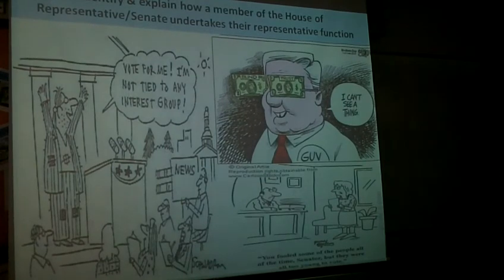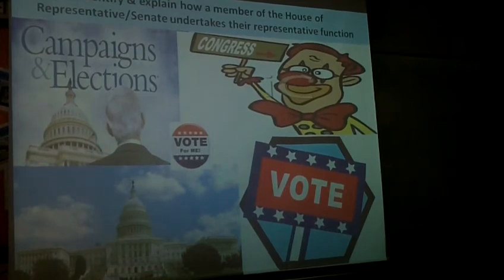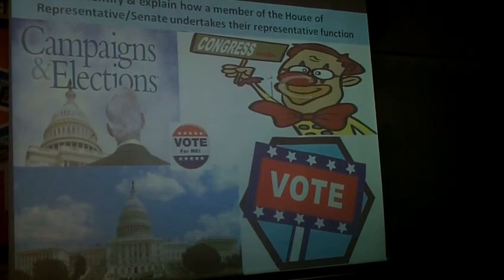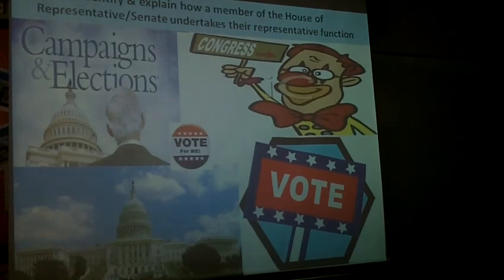A member of the Senate is elected every six years, and a member of the House is elected every two years. Campaigning, therefore, is a big part of the representative function, particularly for members of the House. This includes making speeches, having campaign posters, doing all the right things — prayer breakfasts, constantly being in company with what are described as the hyphenated Americans.